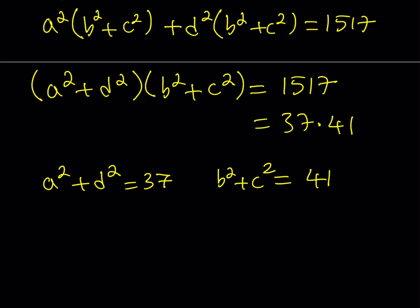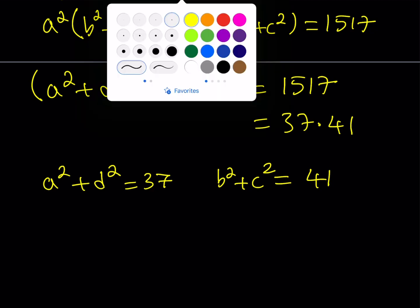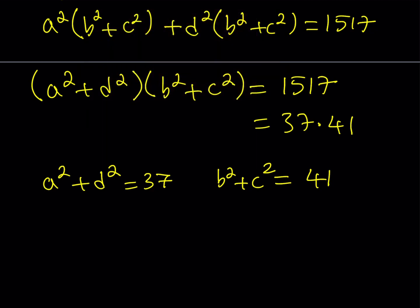So now I've got to find these numbers A, B, C, D. But at the same time, you've got to remember that we have the original problem. Let's go ahead and write it down. It was AB + CD = 34, and AC - BD = 19. So this is my original system, and I've got to make sure whichever solutions I find from here satisfy the first one.